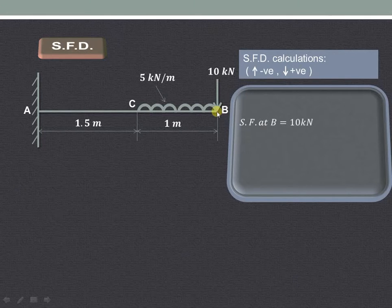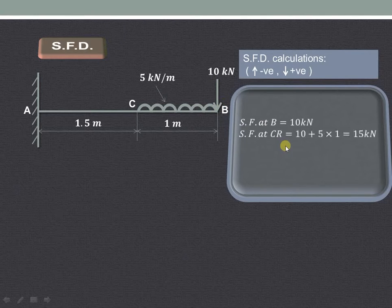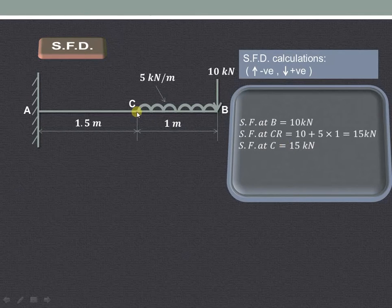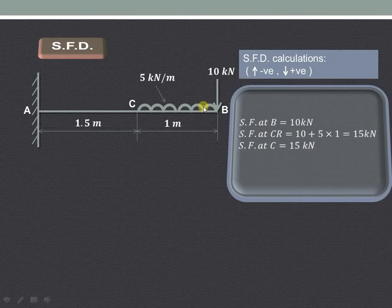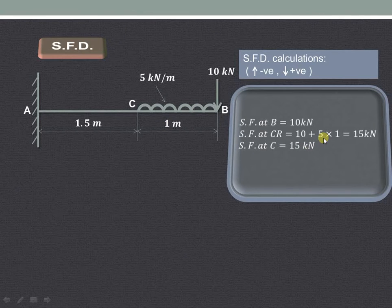Shear force at point B is 10 kN, acting in the downward direction, and hence it is positive. For shear force just to the right of C, we consider all forces acting on the right-hand side of C: 10 kN acting downward, and 5 into 1, which is the uniformly distributed load.